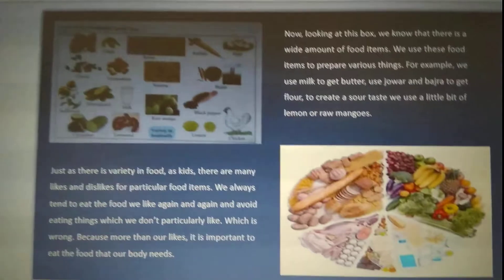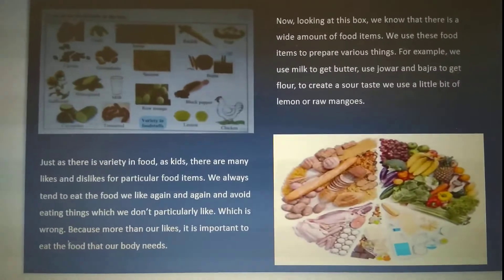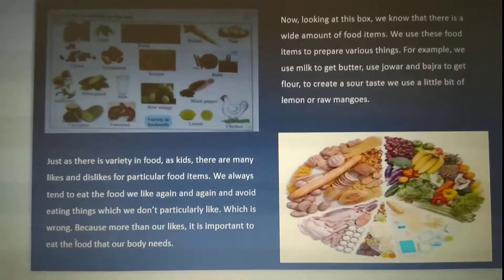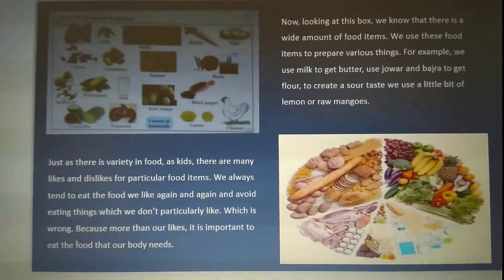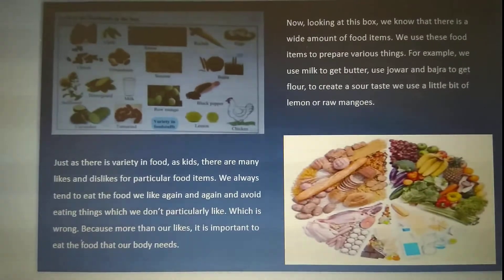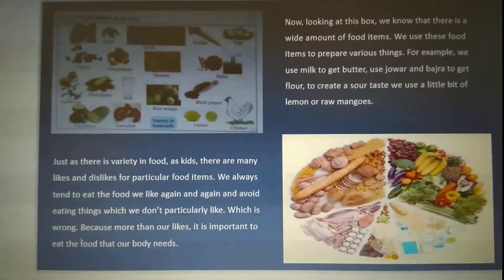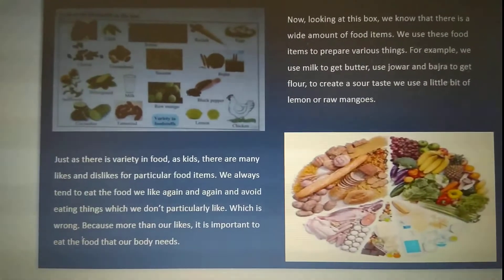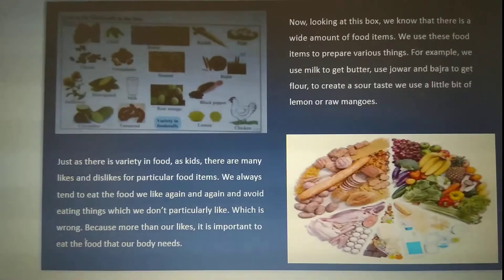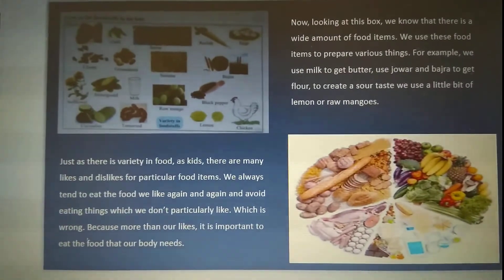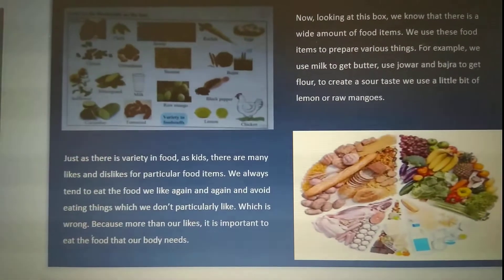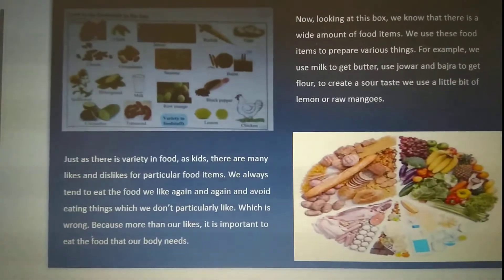You can see a variety of food items in this chart. We use these to prepare various things. For example, we use milk to get butter, use jowar and bajra to get flour, and lemon and raw mangoes for sour taste. Thus there is a variety in food.